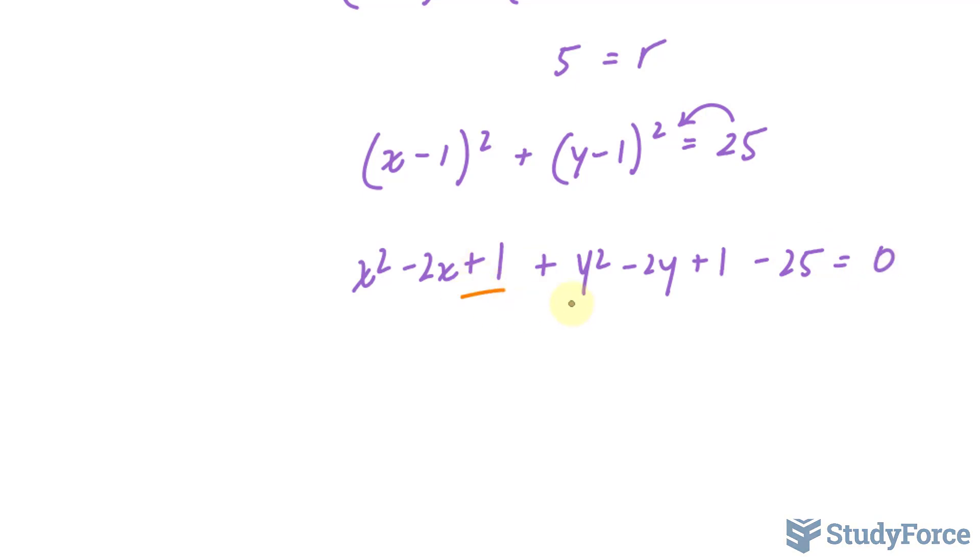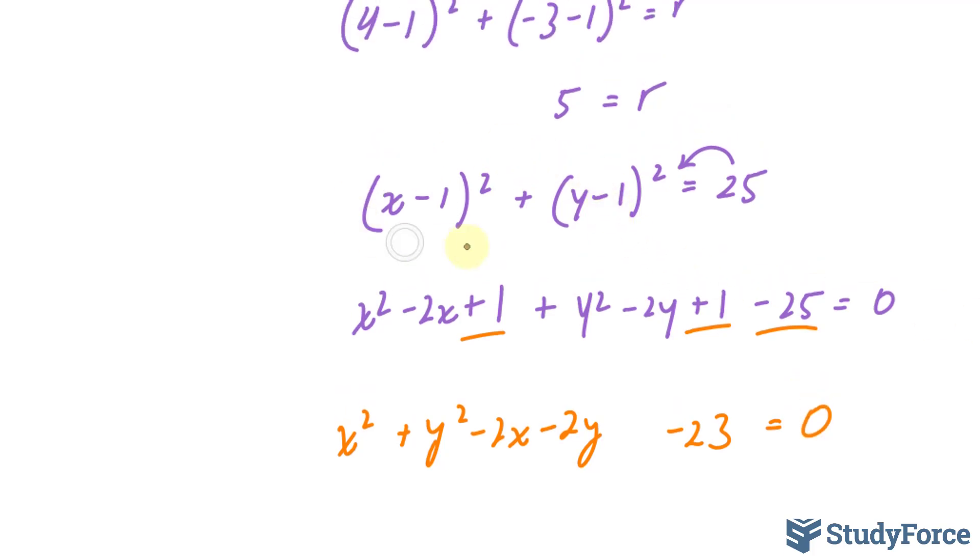Collecting like terms, this and this are like terms. 1 + 1 is 2. 2 - 25 is -23. We start with x², then y², then the x term, then the y term: x² + y² - 2x - 2y - 23 = 0. That expression right there represents the standard form equation converted to general form.